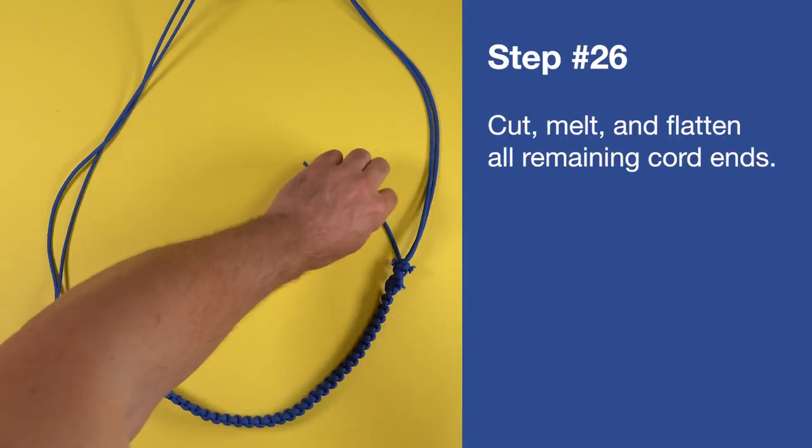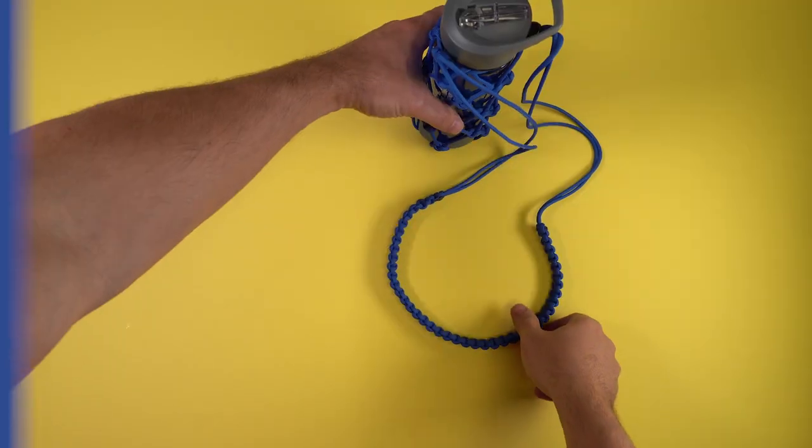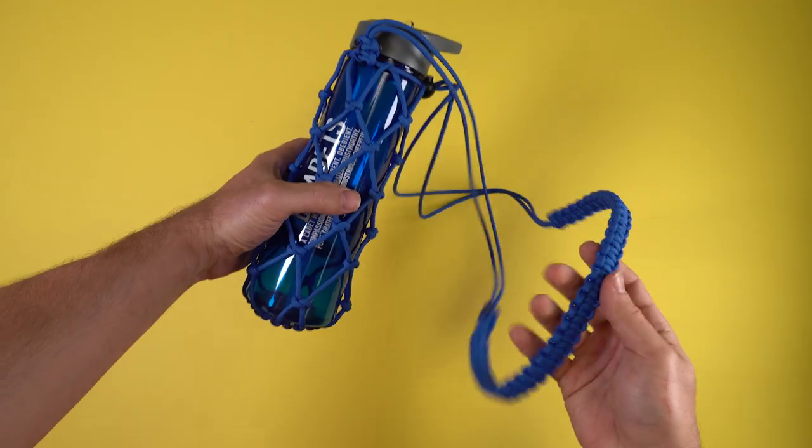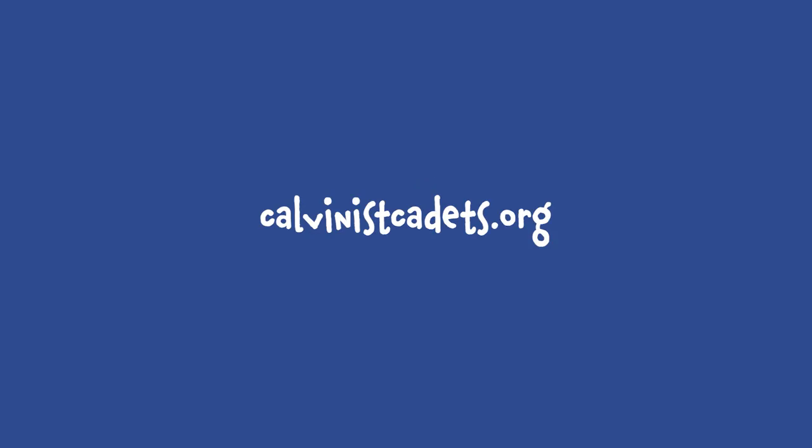Now cut, melt, and flatten all remaining cord ends. And there you have it! You have a water jug carrier! Alright, hope you enjoyed this project, and keep living for Jesus everyone!